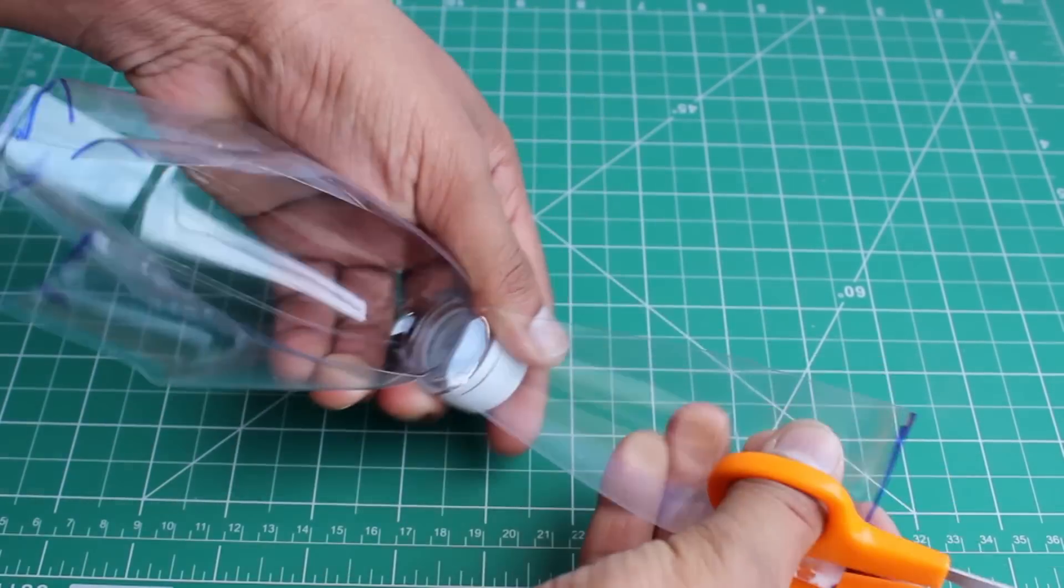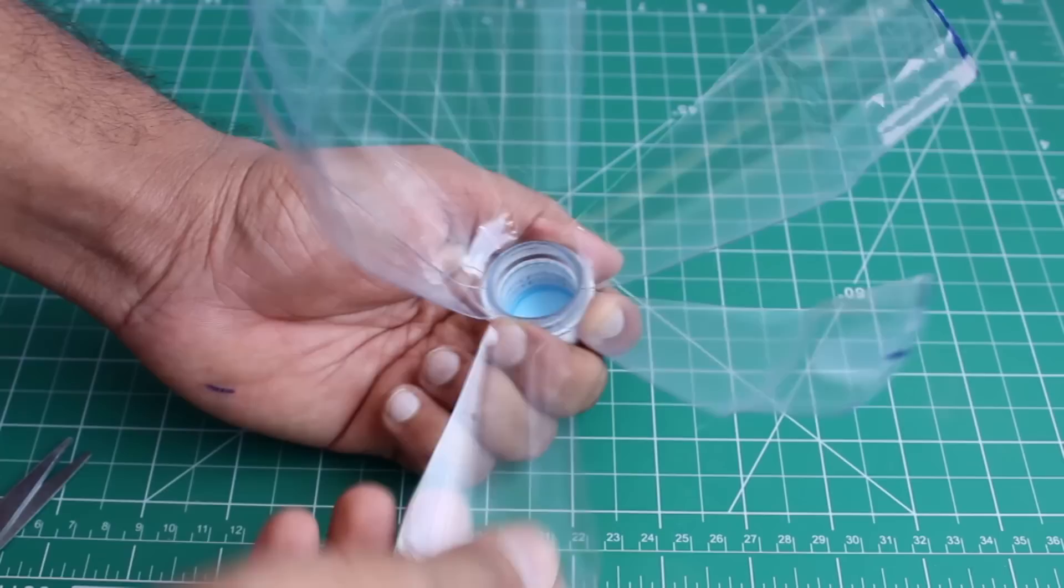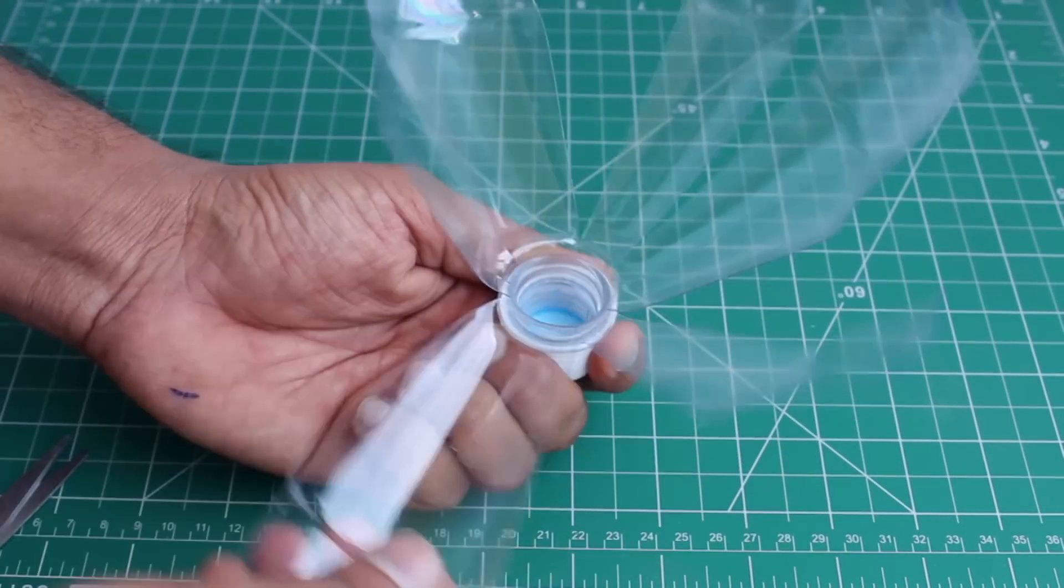After cutting you will get a portion like this. Bend all the wings backward and remove the wings other than the marked three wings.